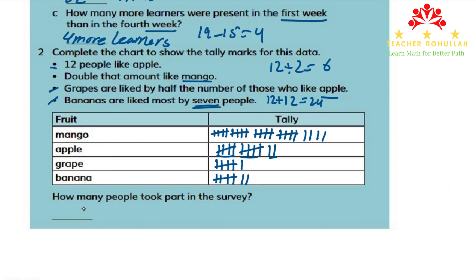Now the following question asks: how many people took part in the survey? To find out, we count: 12 liked apple, 24 liked mango, so 24 plus 12 is 36. And 6 liked grapes, so 36 plus 6 is 42. And 7 people liked bananas, so 42 plus 7 is 49. We can say that 49 people took part in the survey.